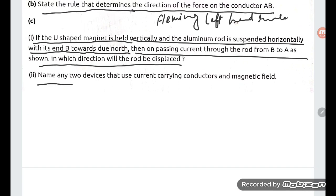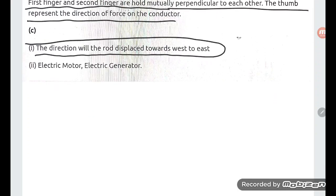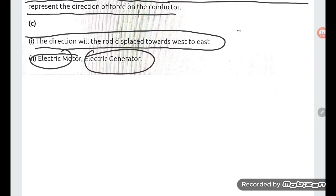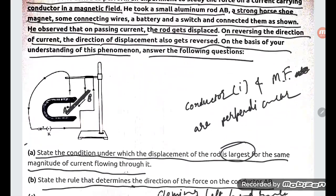And the last one - name any two devices that use current carrying conductor and magnetic field. The electric motor and electric generator. These are the answers. Thank you students.